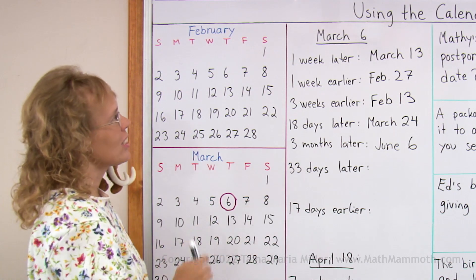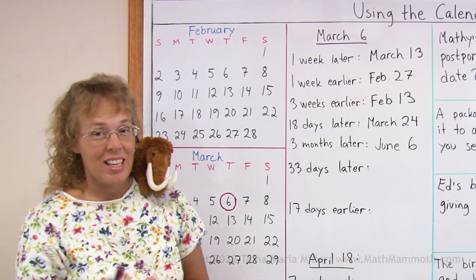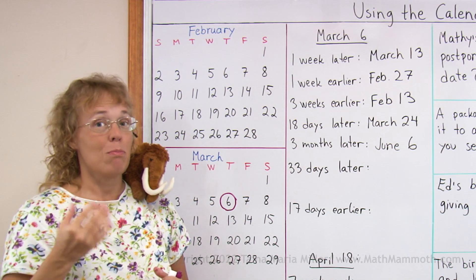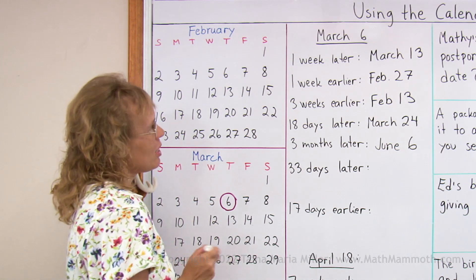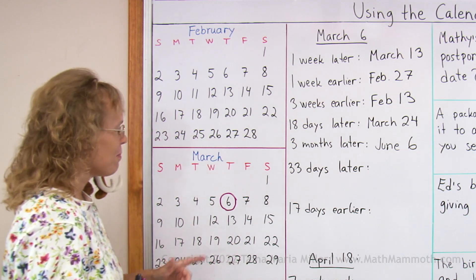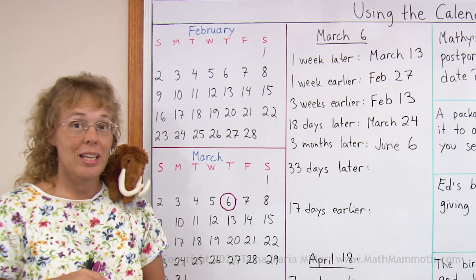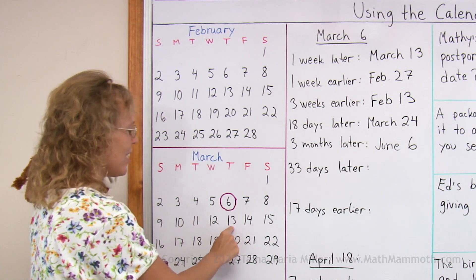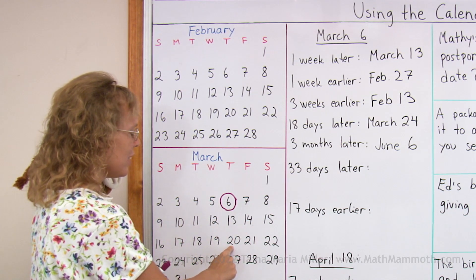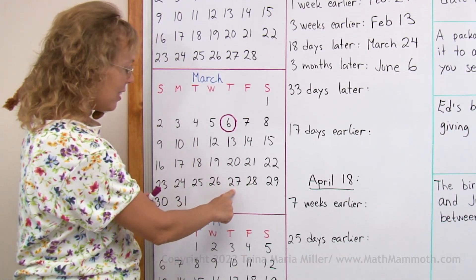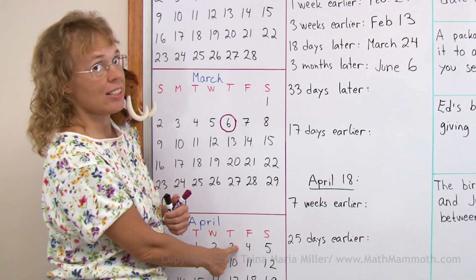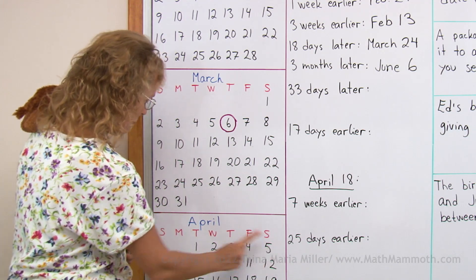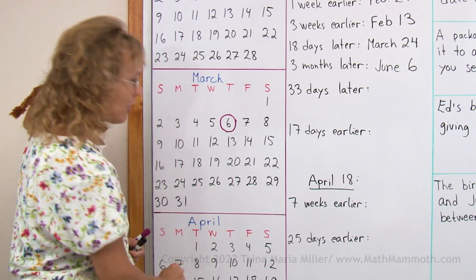33 days later than March 6th. My addition doesn't really work because if I add 33 and 6, I get 39, but there is no such date as March 39th. So I would go on the calendar 33 days later, but to make it quicker I can go by sevens — here's 7 days later, then 14 days later, 21 days later, and then 28 days later. Now we're really close to 33: 28, 29, 30, 31, 32, and 33. So April 8th.